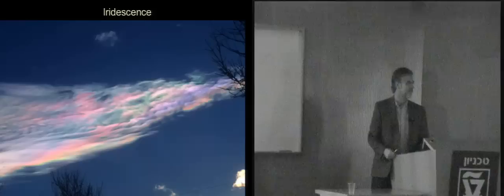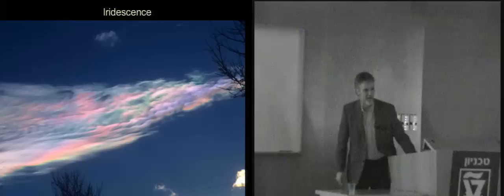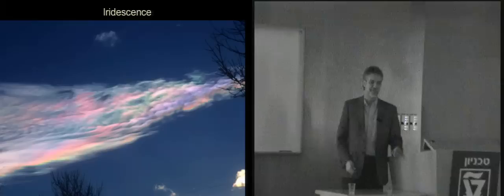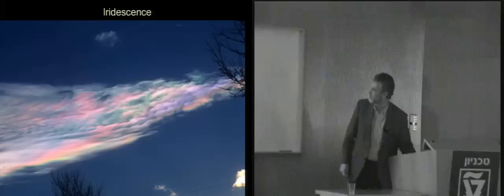A very closely related phenomenon is iridescence — just larger angle scattering. You can think of this as every point in the cloud having a very narrow drop size distribution, but spatially non-uniform. The mean drop size here differs from the mean drop size there, giving all these beautiful pastel colors. This was actually on Christmas Day when I walked outside to escape from lots of family members, looked up, and saw this beautiful iridescent cloud.